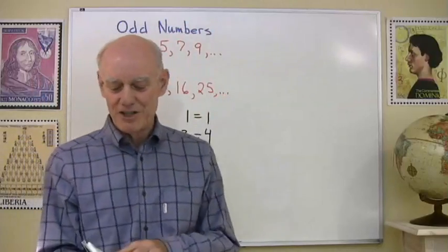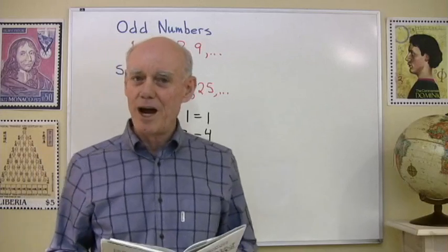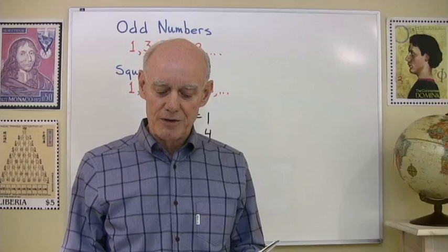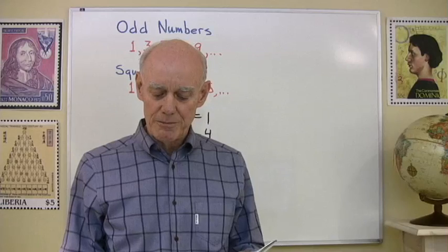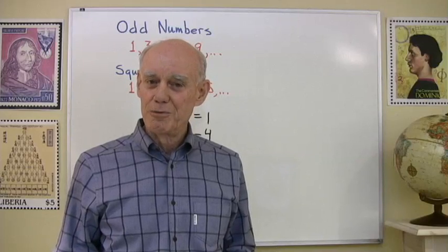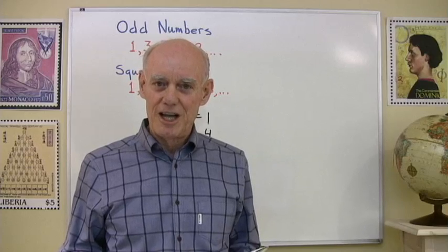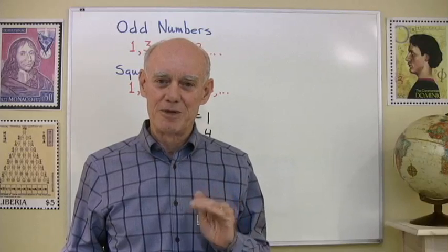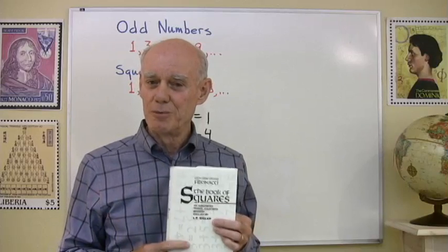So one more thing before I stop this. I've showed them the book of squares by Fibonacci. Now I can go to the prologue where he talks about why he wrote this book, and here's what he has to say towards the end. I've come to request indulgence if in any place it contains something more or less than right or necessary, for to remember everything and be mistaken in nothing is divine rather than human, and no one is exempt from fault. So what Fibonacci is saying is that he may have made a mistake somewhere in this book. Fibonacci knew what you and I know is that human beings make mistakes. Mathematics is a human experience, and Fibonacci is telling us what we already know. Human beings make mistakes.